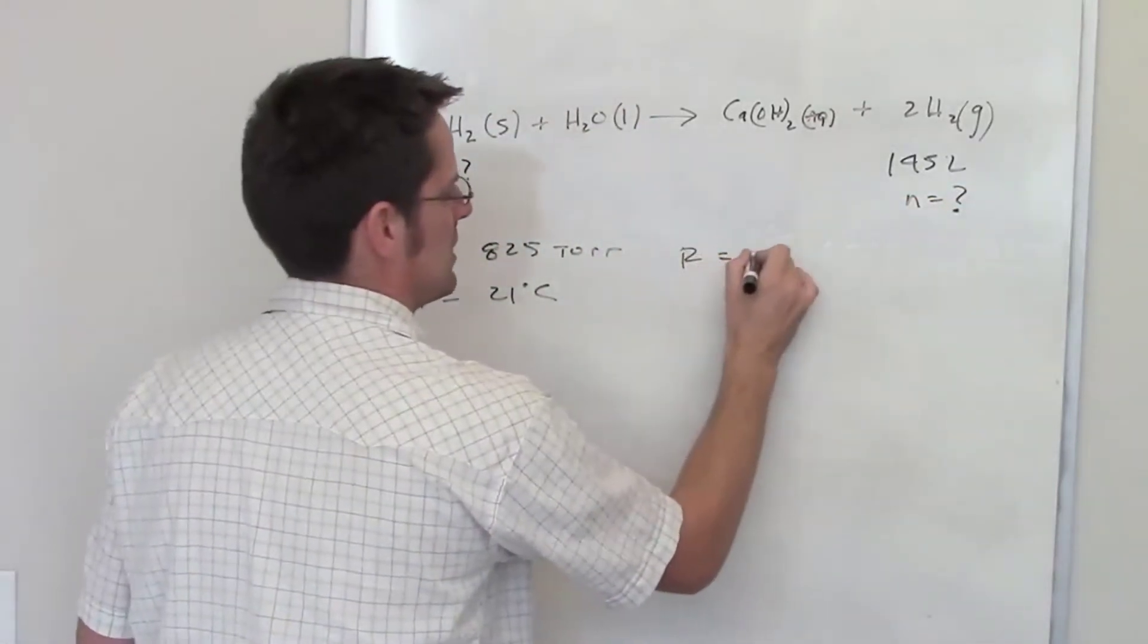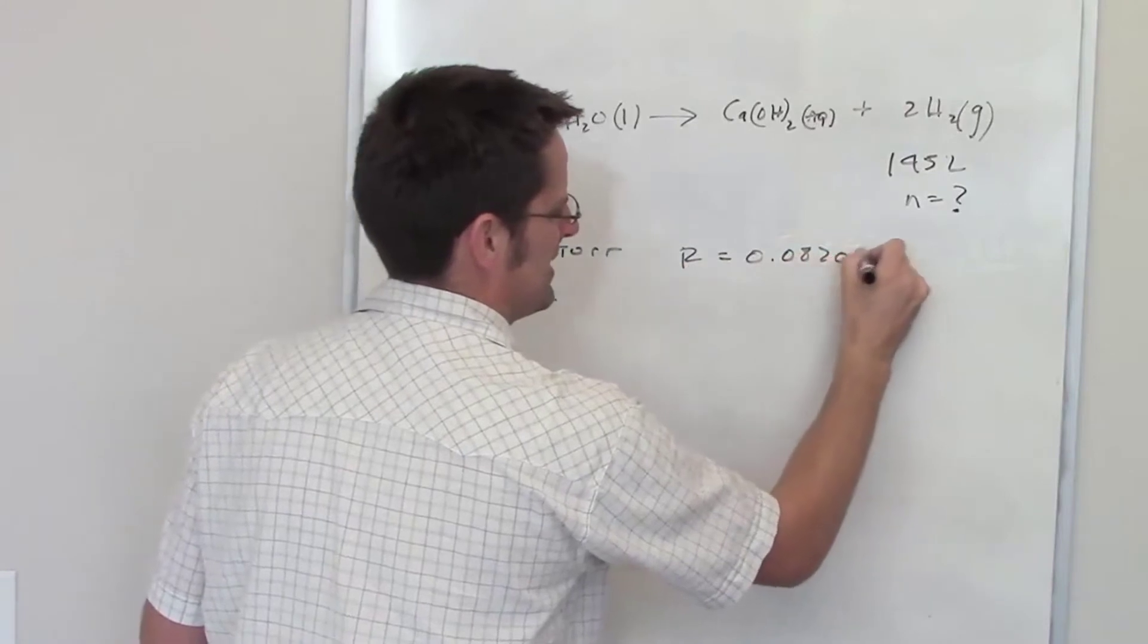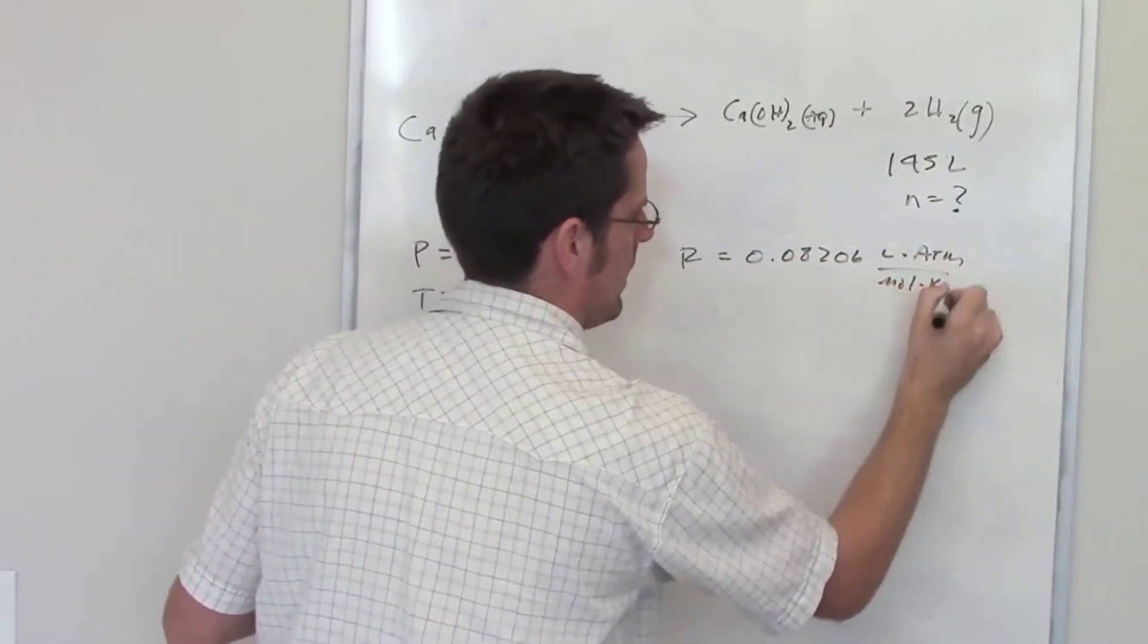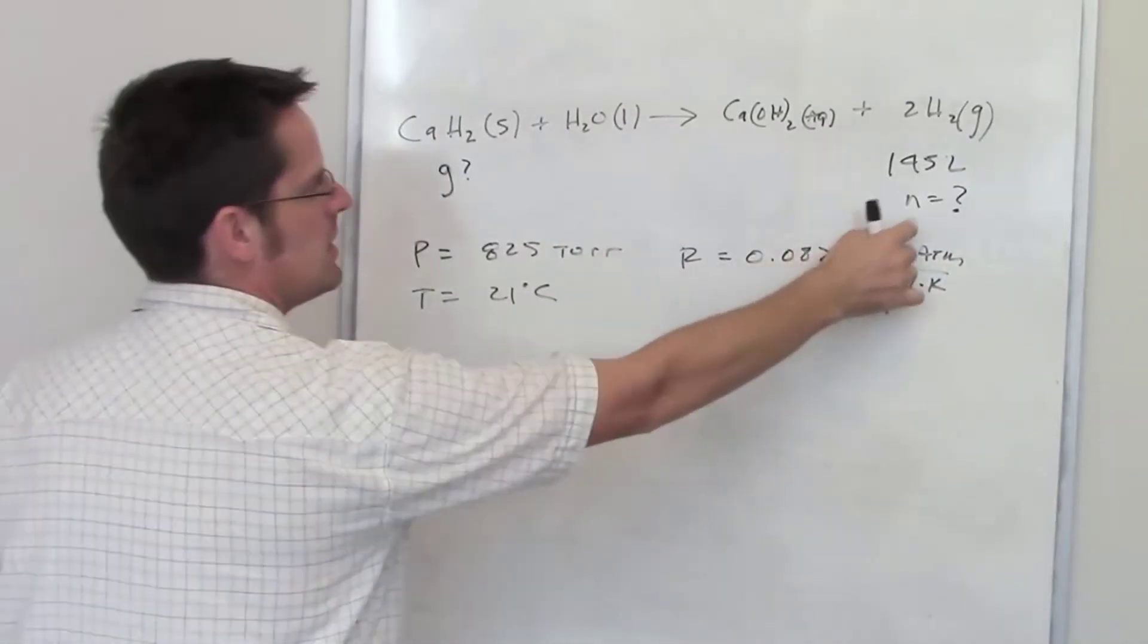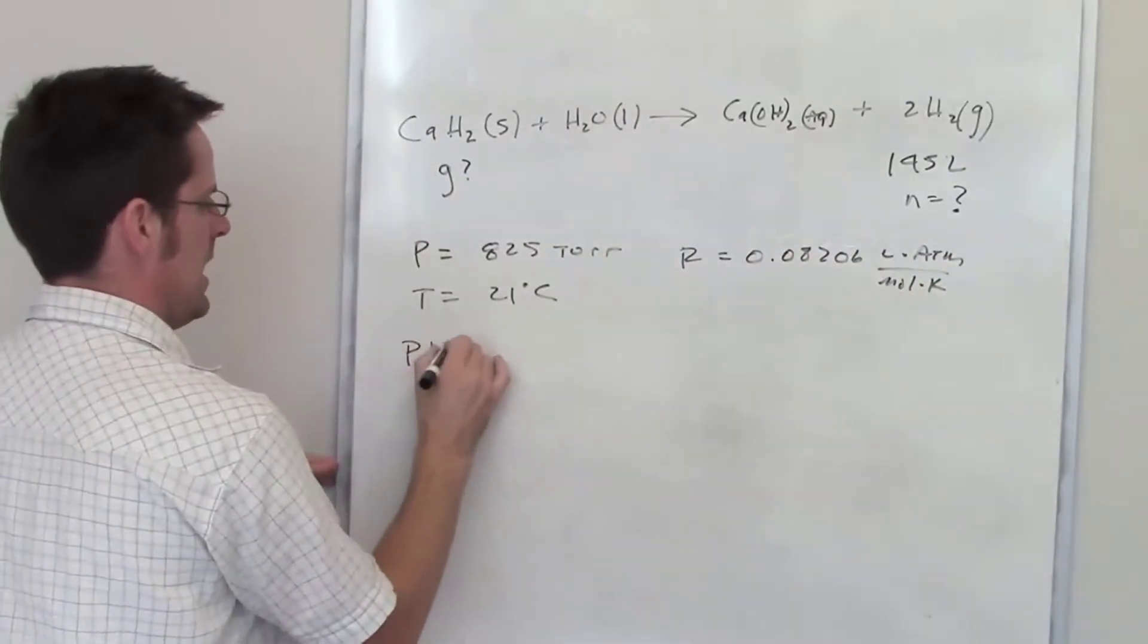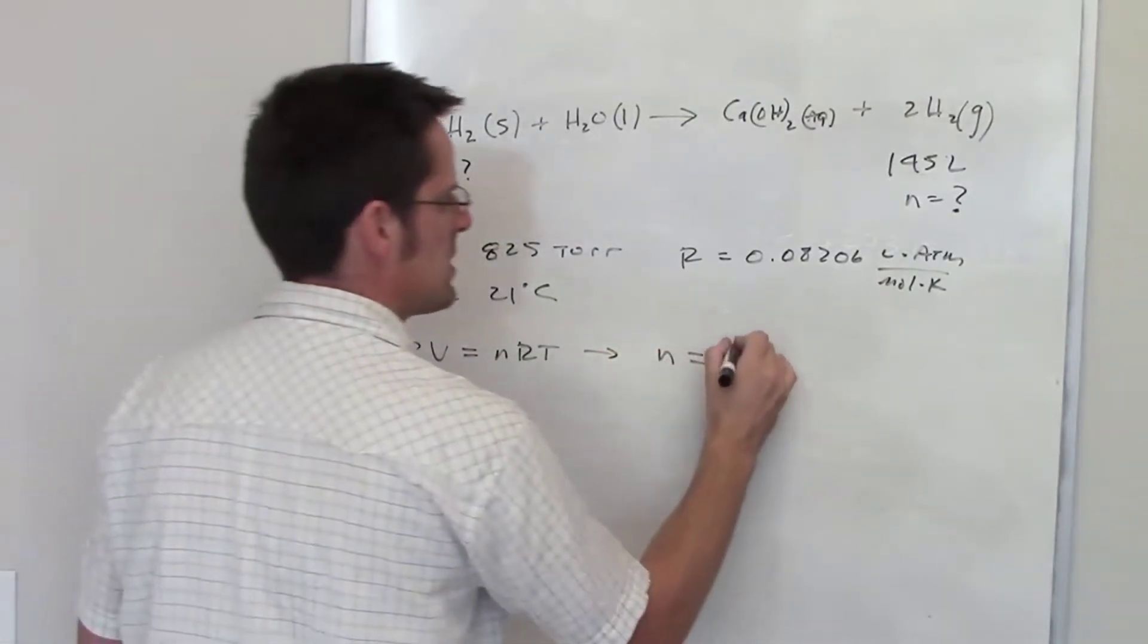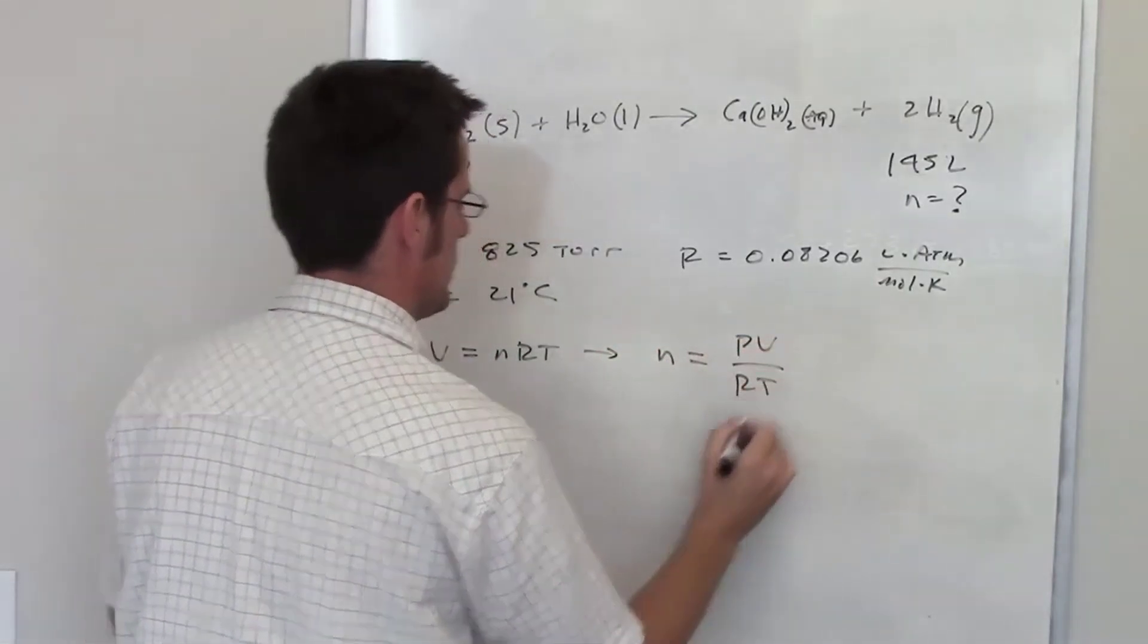Of course, the ideal gas constant is 0.08206 liter atmospheres per mole Kelvin, and I'm going to use the ideal gas law to determine what the number of moles is. Ideal gas law is PV equals nRT. I'm going to rearrange it algebraically to put n on one side and everything else on the other: PV divided by RT.